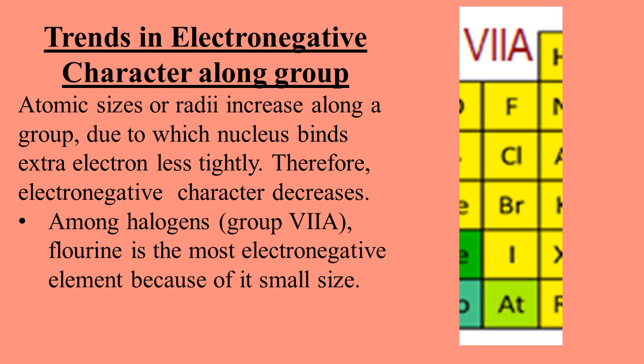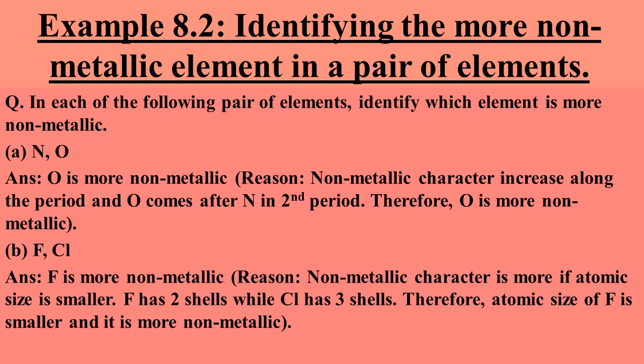Electronegativity trends along a group: atomic size increases down the group as the number of shells increases. Due to greater atomic size, the distance between the nucleus and valence electrons increases, so extra added electrons are less tightly held by the nucleus — therefore electronegative character decreases down a group. Among halogens (group 7A), fluorine is the most electronegative element because it is smallest, having two shells, while chlorine has three shells, bromine four shells, and iodine five shells.